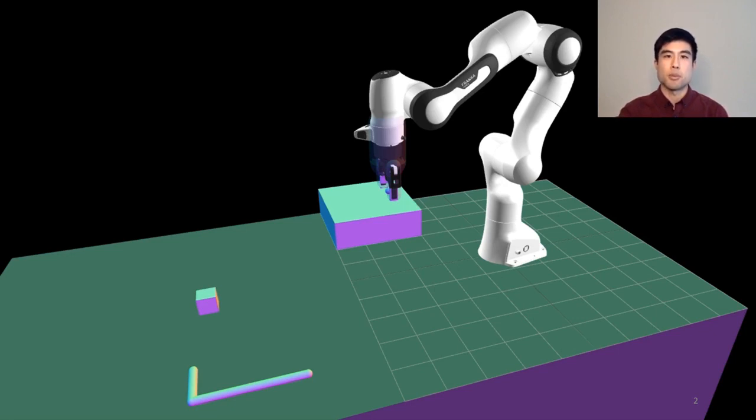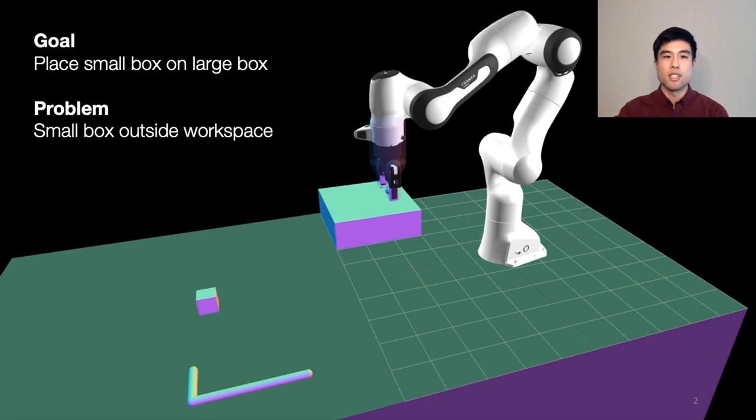I'll walk through this example with a robot arm and four environment objects: a table, a large box, a small box, and an L-shaped hook. Suppose we give the robot the goal to place a small box on the large box, but the small box is outside the robot's workspace.